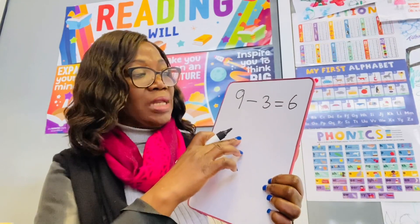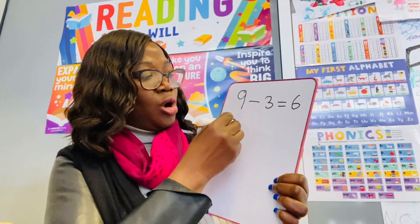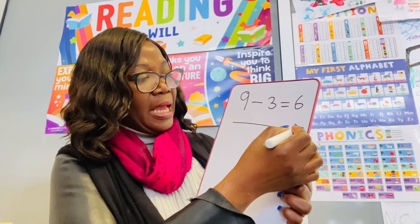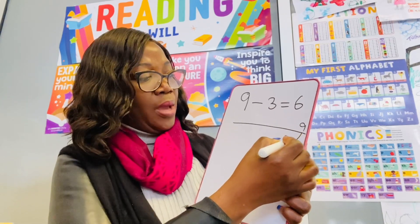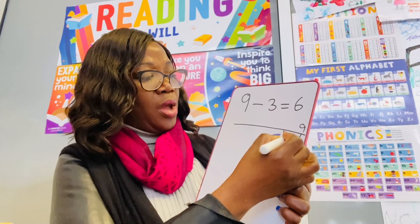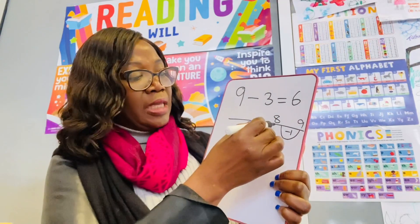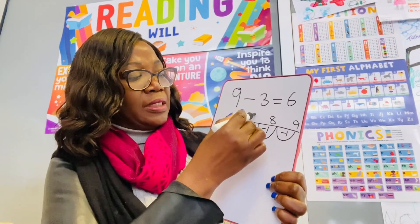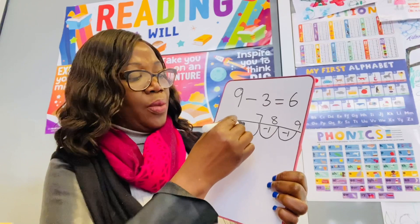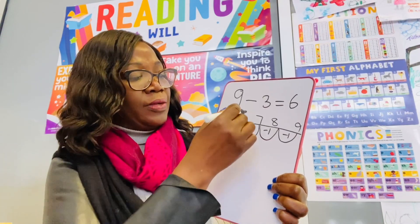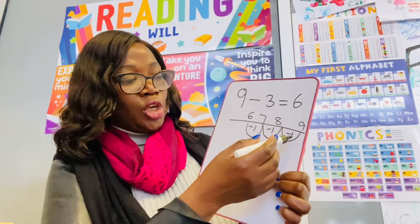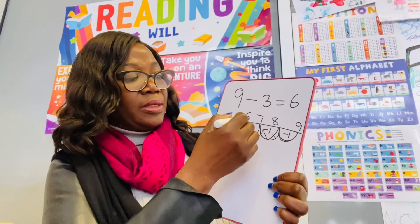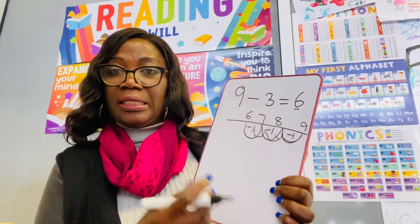But for children that can't do that in their head, they can draw a number line like this. You start with your 9 here, and you take away 1 at a time. 9 take away 1 is 8, take another 1 away and you have 7, take another 1 away and you have 6. So you jump backward 3 times — 1, 2, 3 — and you land on 6. That's why you have 6 as your answer.